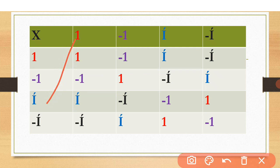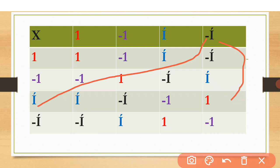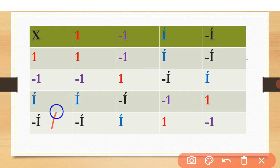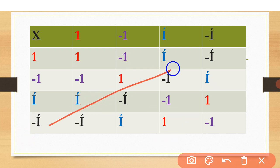When i is multiplied by 1, the answer is i. When i is multiplied by -1, the answer is -i. When i is multiplied by i, we get i² = -1. And when i is multiplied by -i, the answer is +1. When -i is multiplied by 1, the answer is -i. When -i is multiplied by -1, the negatives cancel and the answer is i. When -i is multiplied by i, i² = -1 and the negative makes it +1. And -i multiplied by -i: the negatives cancel and i² = -1.